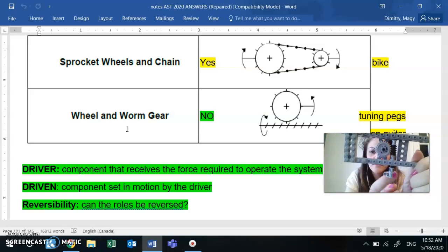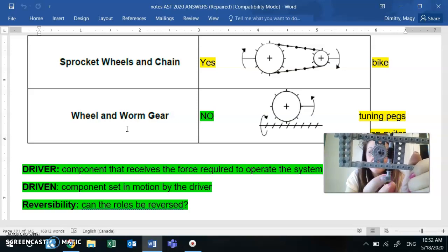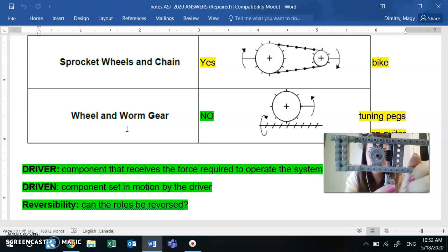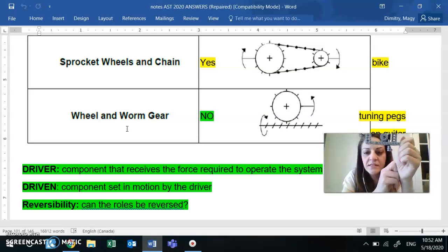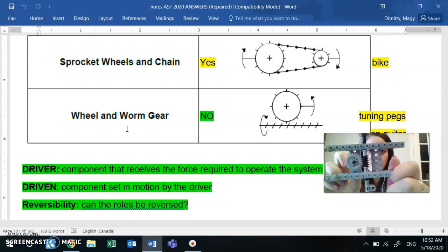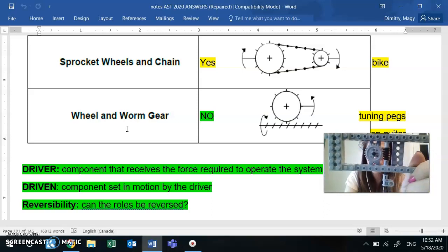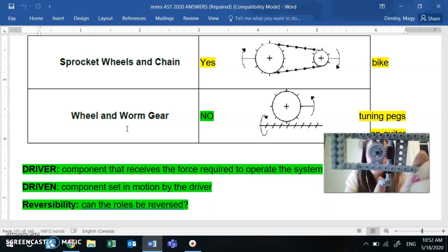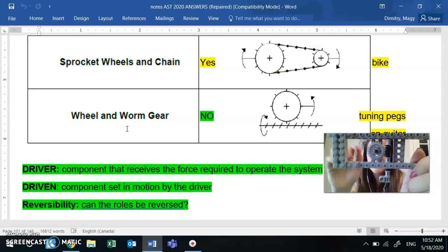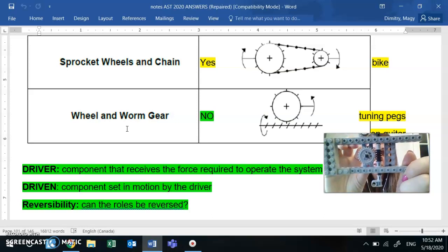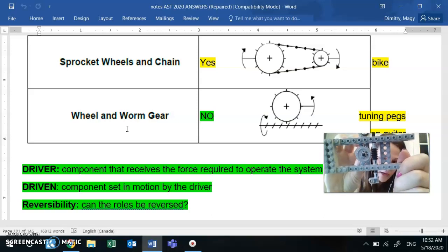Question is, is it reversible? This is the only one that is not. Carefully look at this. So the driver is the worm and the driven is the gear. That is good. Now let's see if I can reverse and make the gear the driver. I'm trying to spin it but it gets jammed.